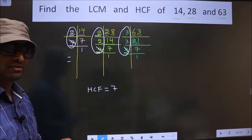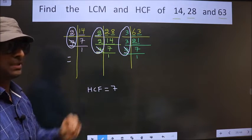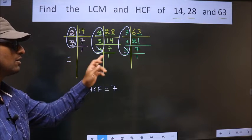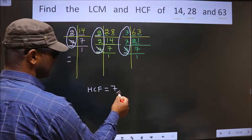Therefore, we have only one number, that is 7, present in all the 3 places. I repeat, only one number, 7, present in all the 3 places. Therefore, it is our HCF.